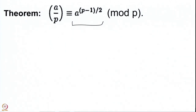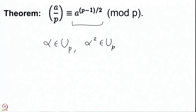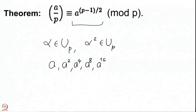A computer can compute squares of elements quite easily. So whenever we are given any alpha in Z_p, a computer can compute alpha squared. Instead of listing all elements, once we have a we compute a squared, then the square of that giving a to the 4, then a to the 8, a to the 16, and so on. Then to compute a certain power of a, we simply take the product of certain elements from this sequence.